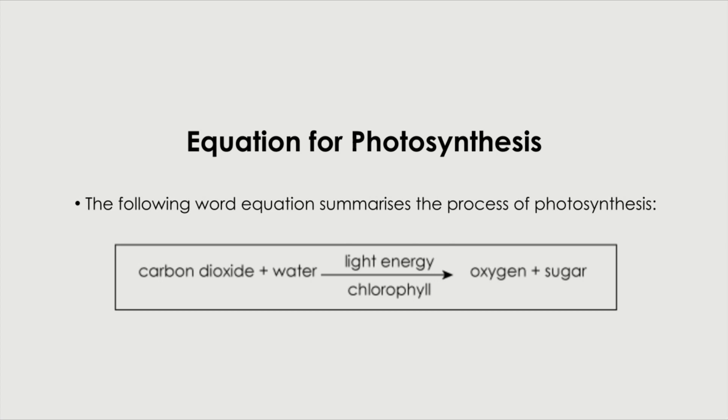What is the equation for photosynthesis? This is going to be the equation that you have to memorize but if you understand the process, this equation is easy to understand. We have the carbon dioxide and water that we talked about. With light energy and chlorophyll gives you oxygen and sugar. This is what is taken in by the plant. This is what's needed by the plant and this is what's given out.